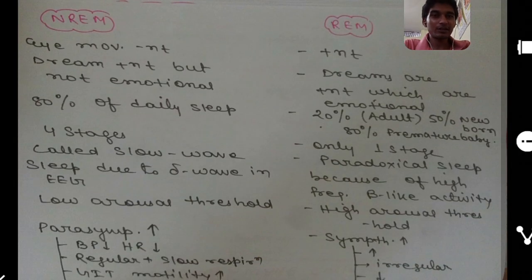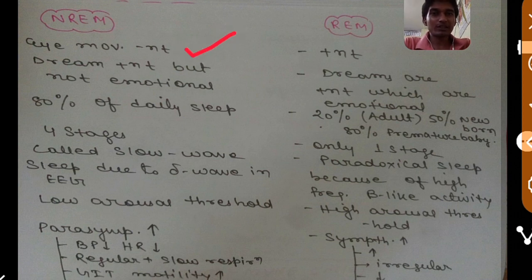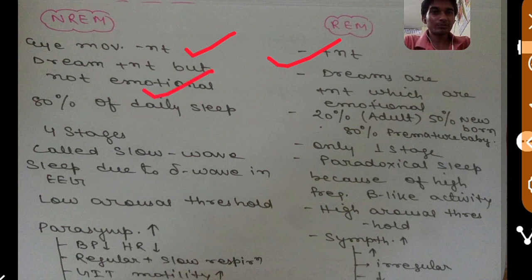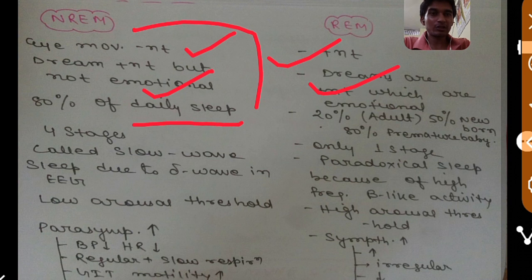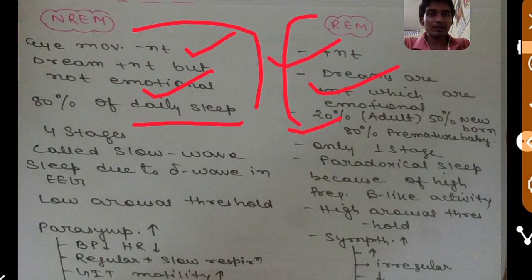Differences between NREM and REM sleep: eye movement is absent in NREM but present in REM. Dreams occur in both, but dreams are not as emotional in NREM whereas they are more powerful and emotional in REM. 80% of daily sleep in adults is NREM and 20% is REM, whereas 50% in newborns and 80% in premature babies is REM sleep, because myelination requires REM sleep. NREM has four stages whereas REM has only one stage.